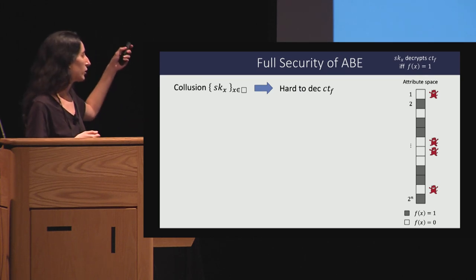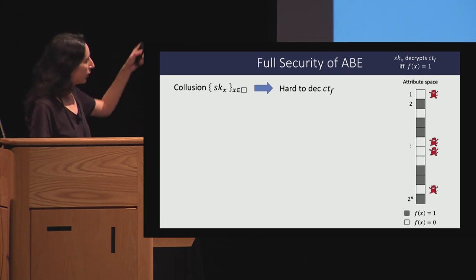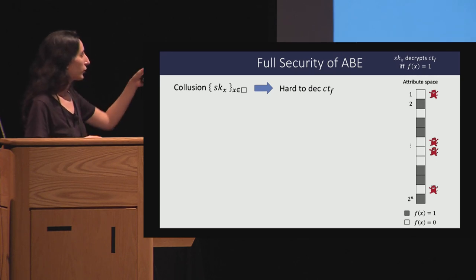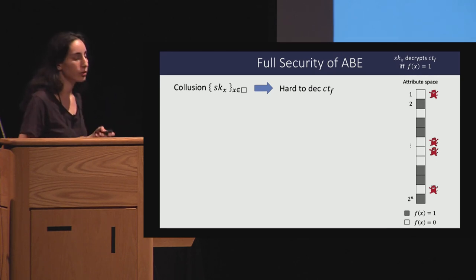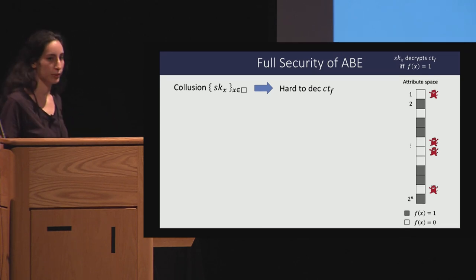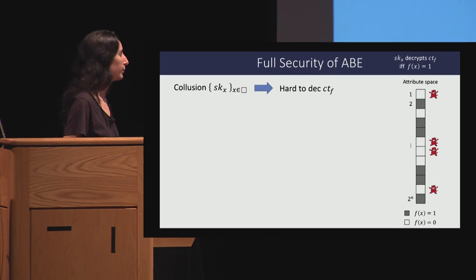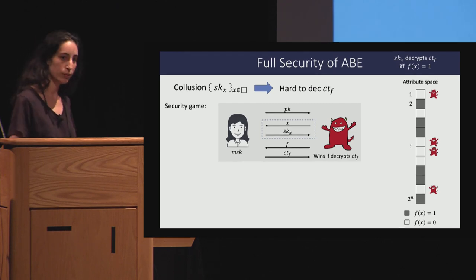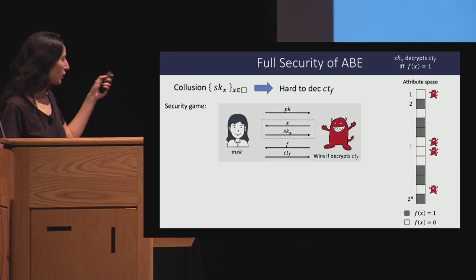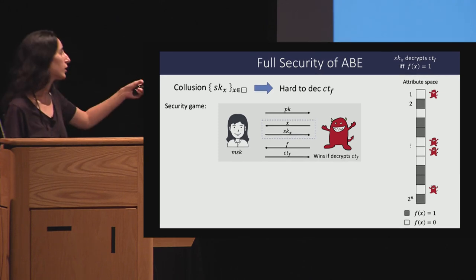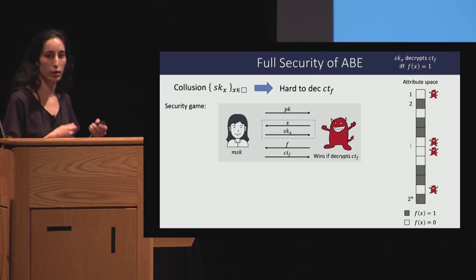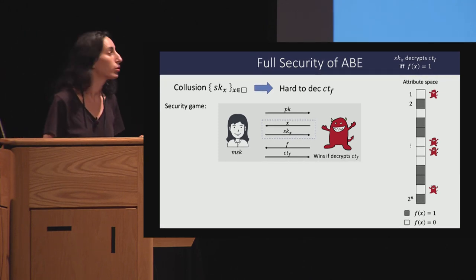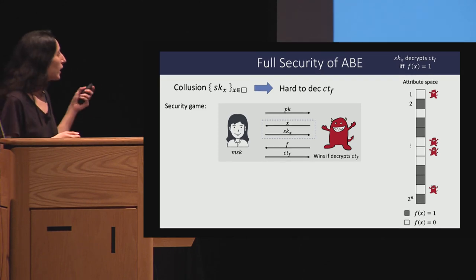If there is a collusion of adversarial users and all of them are in the non-authorized areas, then they cannot decrypt the ciphertext. To capture this requirement, there is a security game. There is the challenger who holds the master secret key, and there is the adversary that controls all of the colluding users.